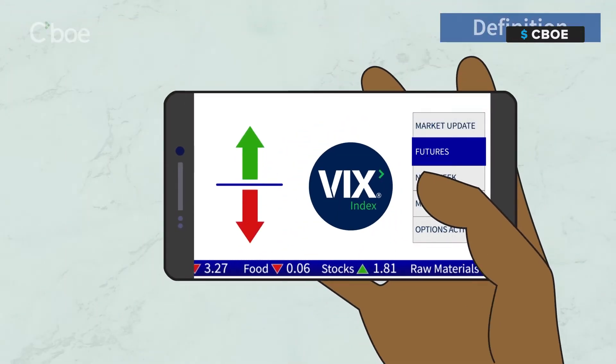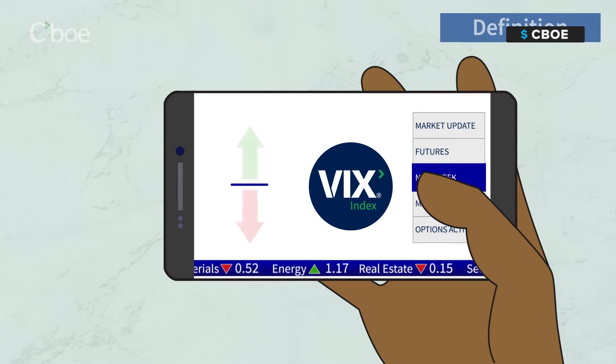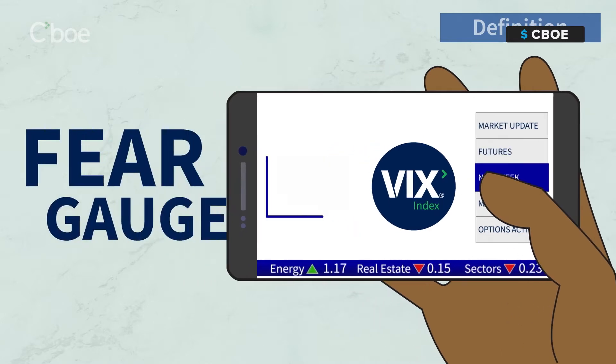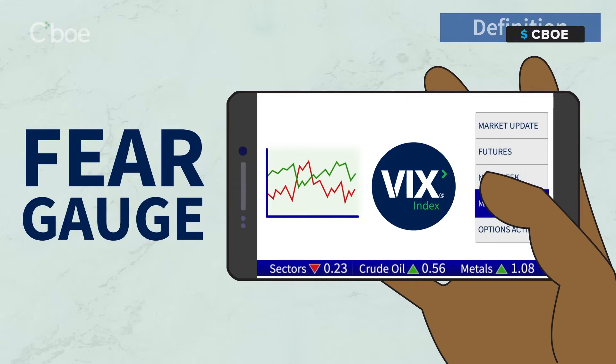Additionally, the VIX calculator — a tool that derives an estimate of the expected price range of the S&P 500 index over the next 30 days based on specific user inputs — is also available on the CBOE website.